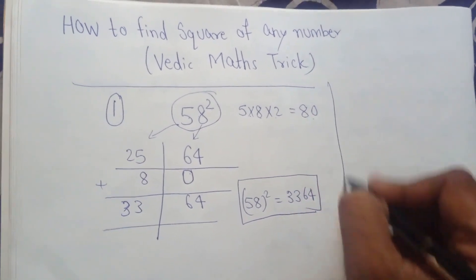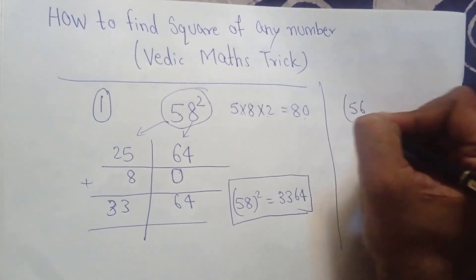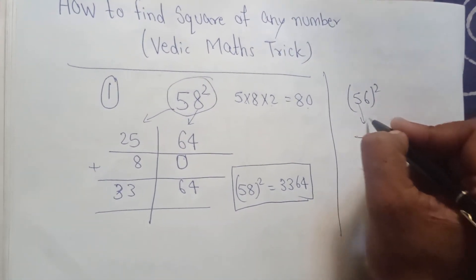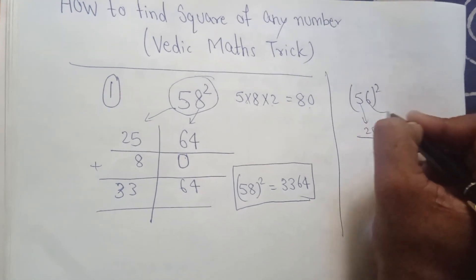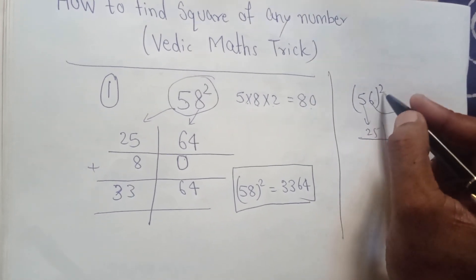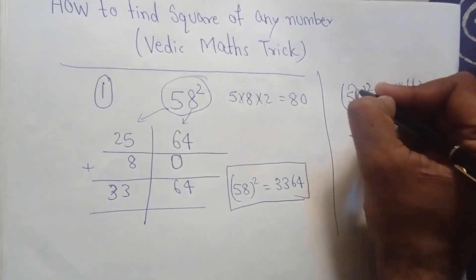Suppose that I have to find the square of 56. Again by this trick, I have to put 5² = 25 here, and 6² = 36 here.